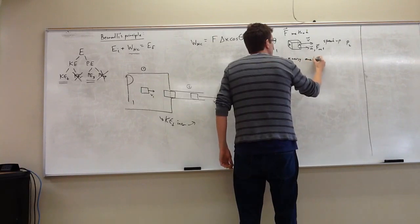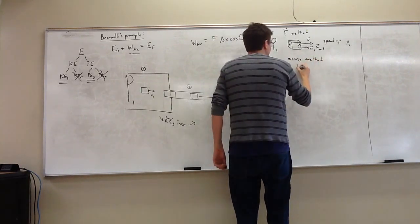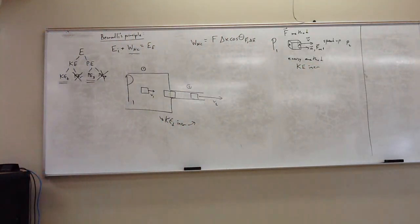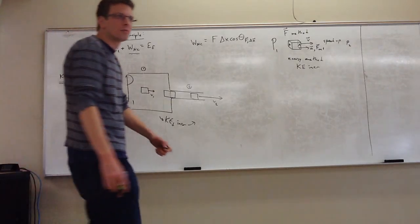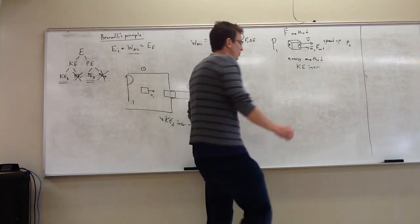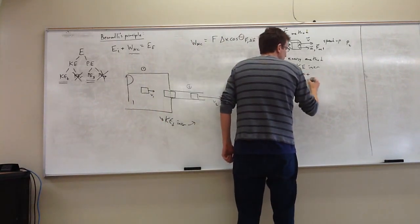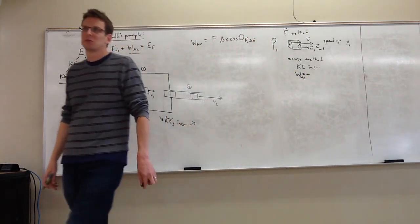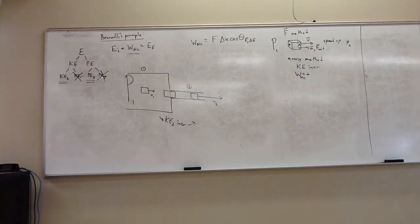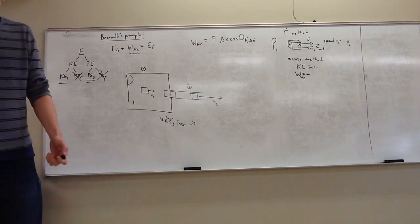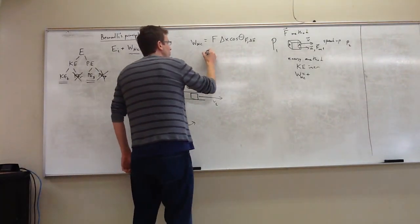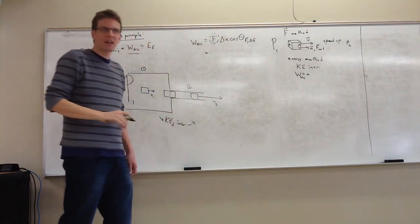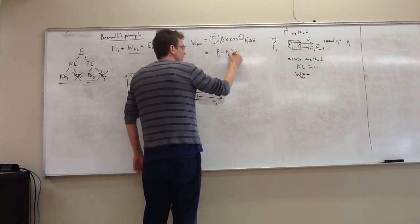Using the energy method: the kinetic energy increases, which means our non-conservative work is expected to be positive. Positive work is a deposit to the kinetic energy. The force due to the pressure difference — I want to subtract so I don't get a negative by accident — P1 is the bigger one, so it's (P1 minus P2) times A. That is the force from the pressure difference.